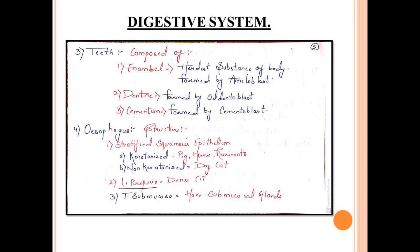Moving to the next organ, esophagus. Esophagus is lined by stratified squamous epithelium, which can be of two types: keratinized type and non-keratinized type. Keratinized type includes pigs, horses, and ruminants. Non-keratinized type is carnivores.